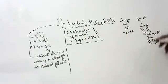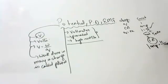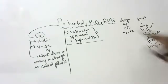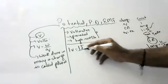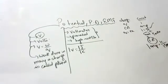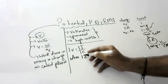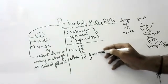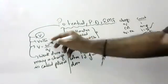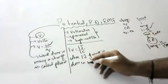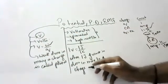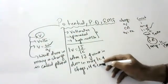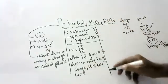Define one Ampere: when one Coulomb flows for one second, it is called one Ampere. Define one Volt: when one Joule of work is done in moving one Coulomb of charge, it is called one Volt.